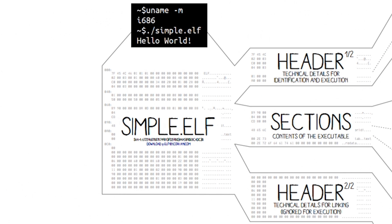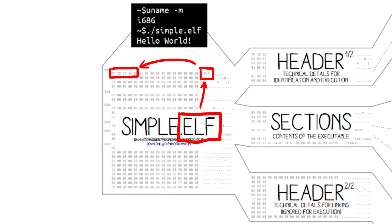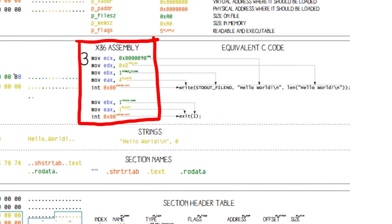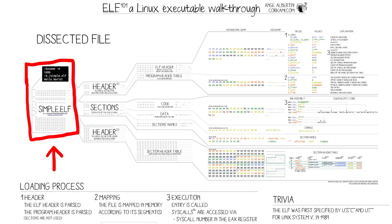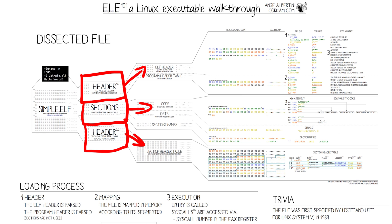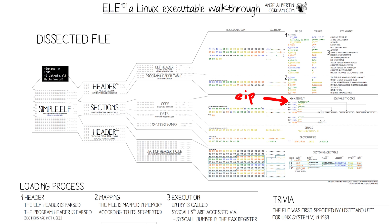That's why a program is not just plain assembler code but a fairly complex file format — an ELF file — which does contain your raw code but also a lot of other information. And when you execute this program, the Linux system will actually open the ELF file, read and interpret all the necessary metadata, set up the execution environment for you, and then jump to the start of your actual code.